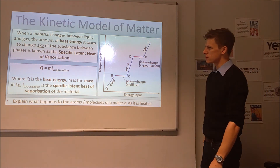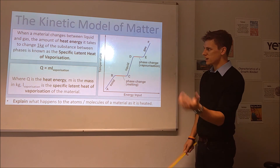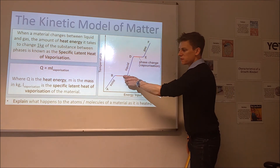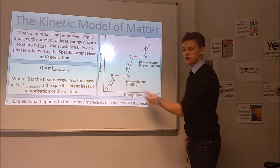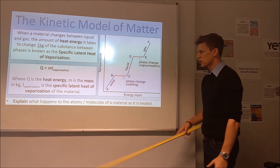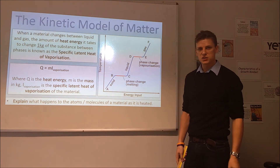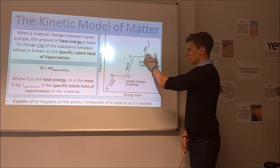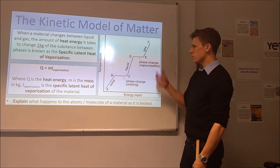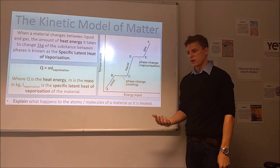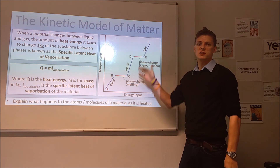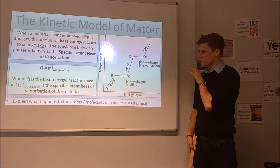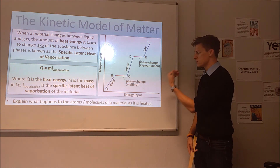Looking at the other boundary — going from liquid to gas — it takes a fixed amount of energy per kilogram, but it's going to be a different amount to the fusion one because of the difference in potential energies. That's the specific latent heat of vaporization, which tells you how much thermal energy you need to supply per kilogram to go from a liquid to a gas, or conversely how much energy you need to remove per kilogram to go from a gas to a liquid. It works both ways on this graph.